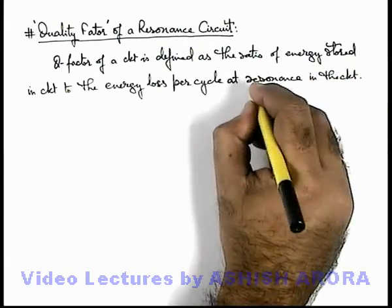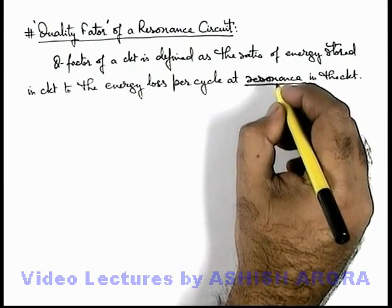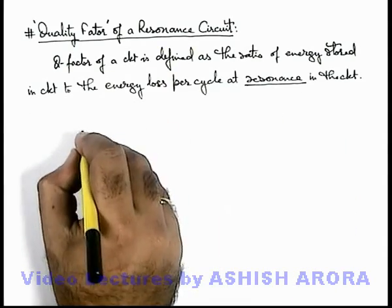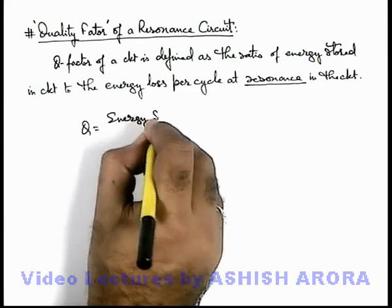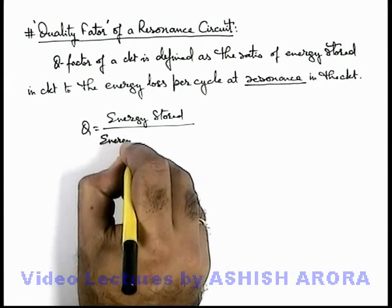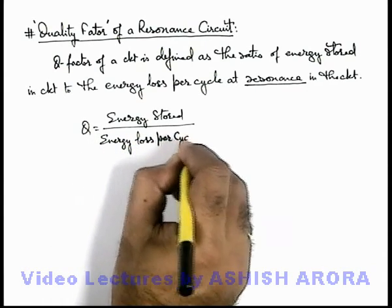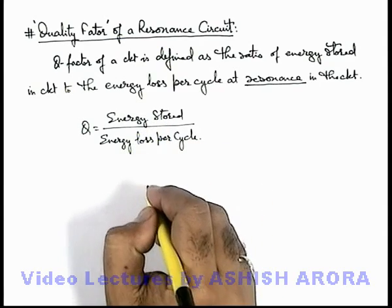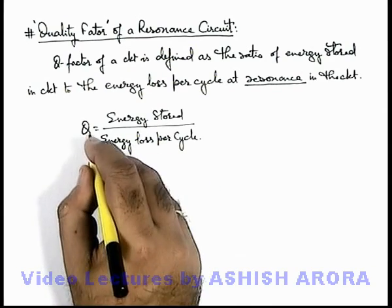That means when resonance occurs, that is at resonating frequency, the ratio of energy stored in the circuit to the energy loss per cycle — this is defined as the Q factor of the circuit. It is written as: energy stored divided by energy loss per cycle. In one cycle, the ratio of these two energies — one is stored, the other is the loss — is defined as the quality factor of the circuit.